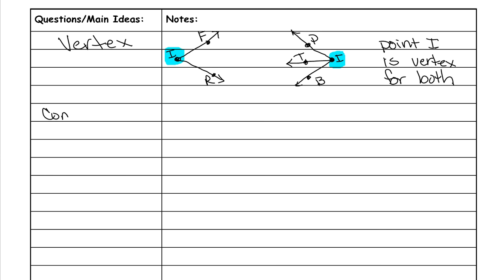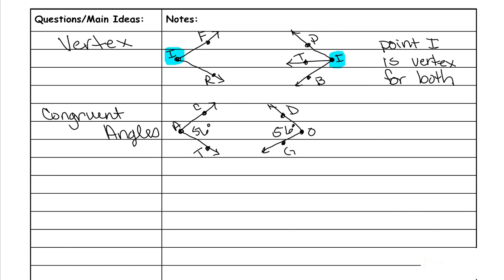Now, congruent angles. Here are two examples. Both of these angles are 56 degrees, and that's what it means to be congruent — they're equal to each other. We have three ways to write this. You can have angle CAT is congruent to angle DOG — the congruent symbol is an equal sign with a tilde on top. It can be named angle TAC is congruent to angle GOD, or angle A is congruent to angle O. It can be named any one of those three ways.